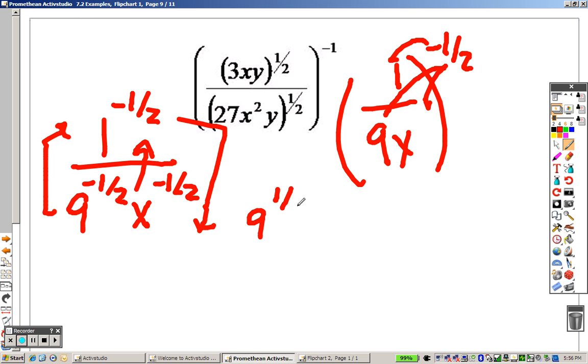So really, I have 9 to the 1-half, I have x to the 1-half, and 1 to the 1-half. Well, 1 to the anything power is just 1, which basically means I no longer have a fraction.